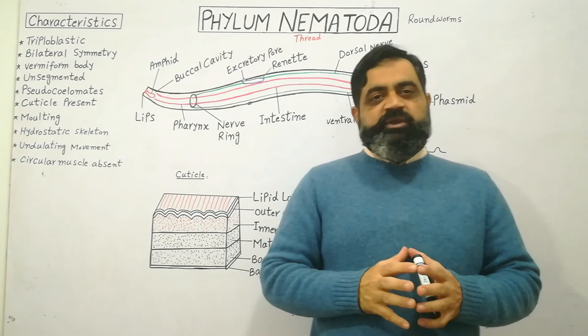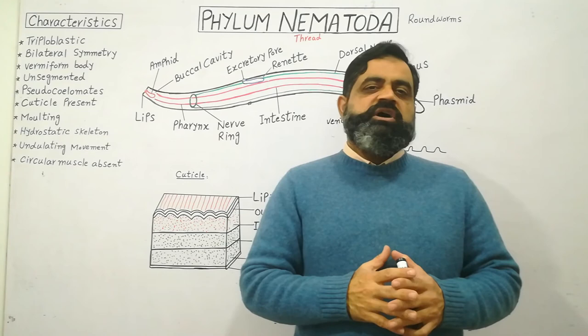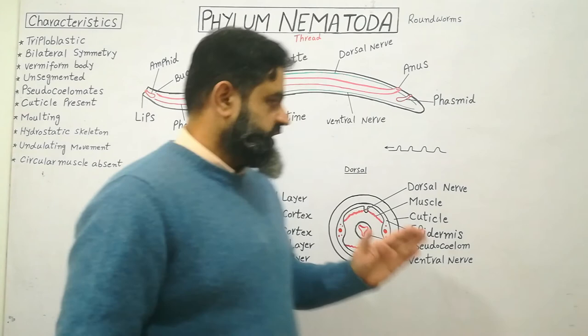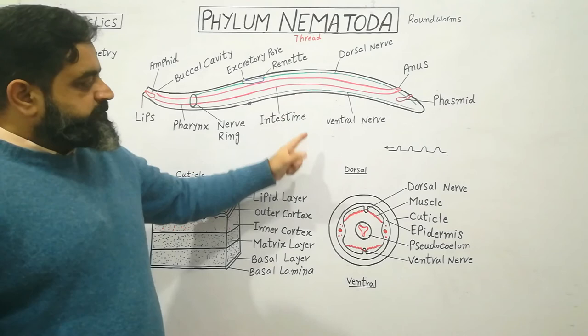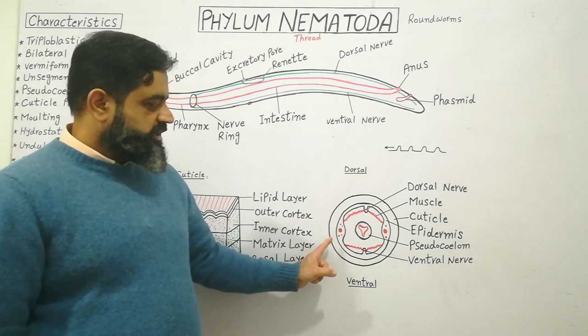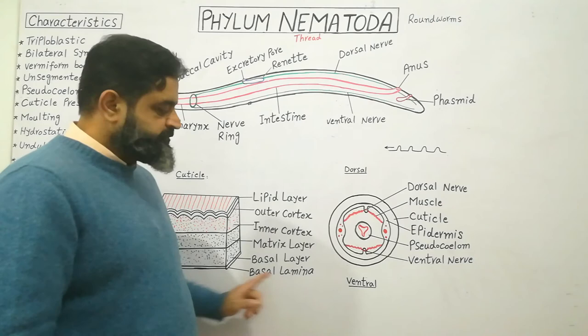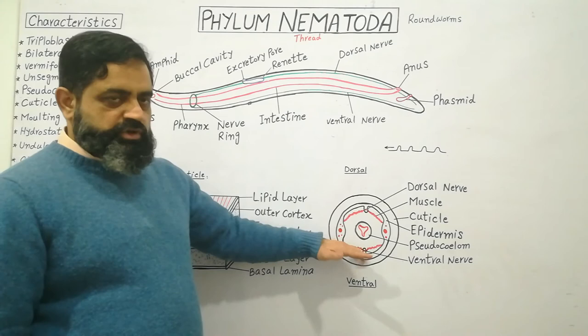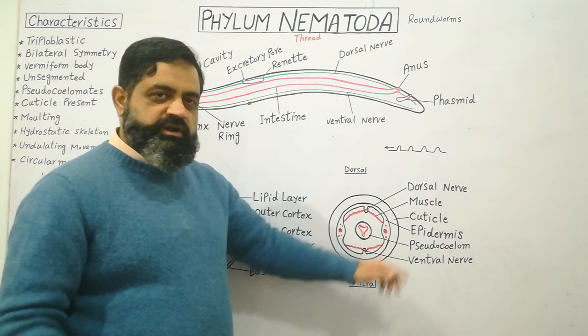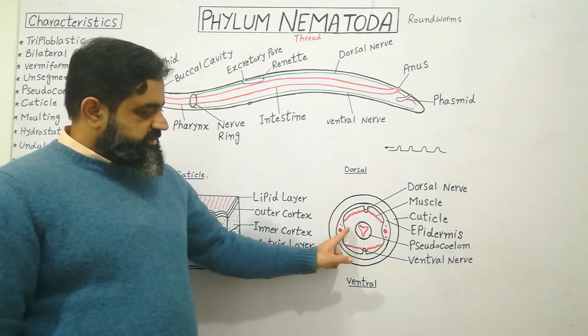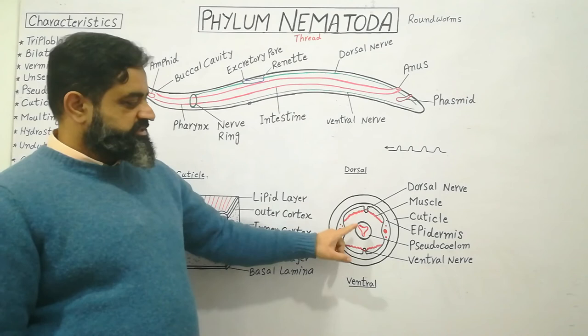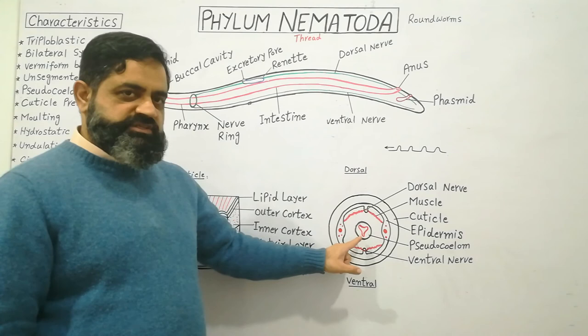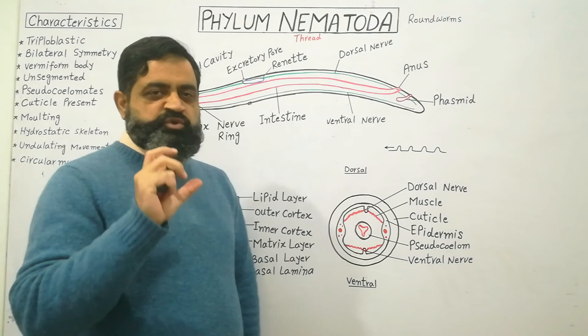These animals have a well-developed digestive system, nervous system, and excretory system. Now let's look at the internal structure through a cross-section. Cutting the animal in cross-section, the outermost portion is the cuticle. Just beneath the cuticle is the epidermis. Under the epidermis is a tube-like digestive system shown in red. Surrounding the digestive system is the pseudocoelom cavity filled with fluid, which provides the hydrostatic skeleton.